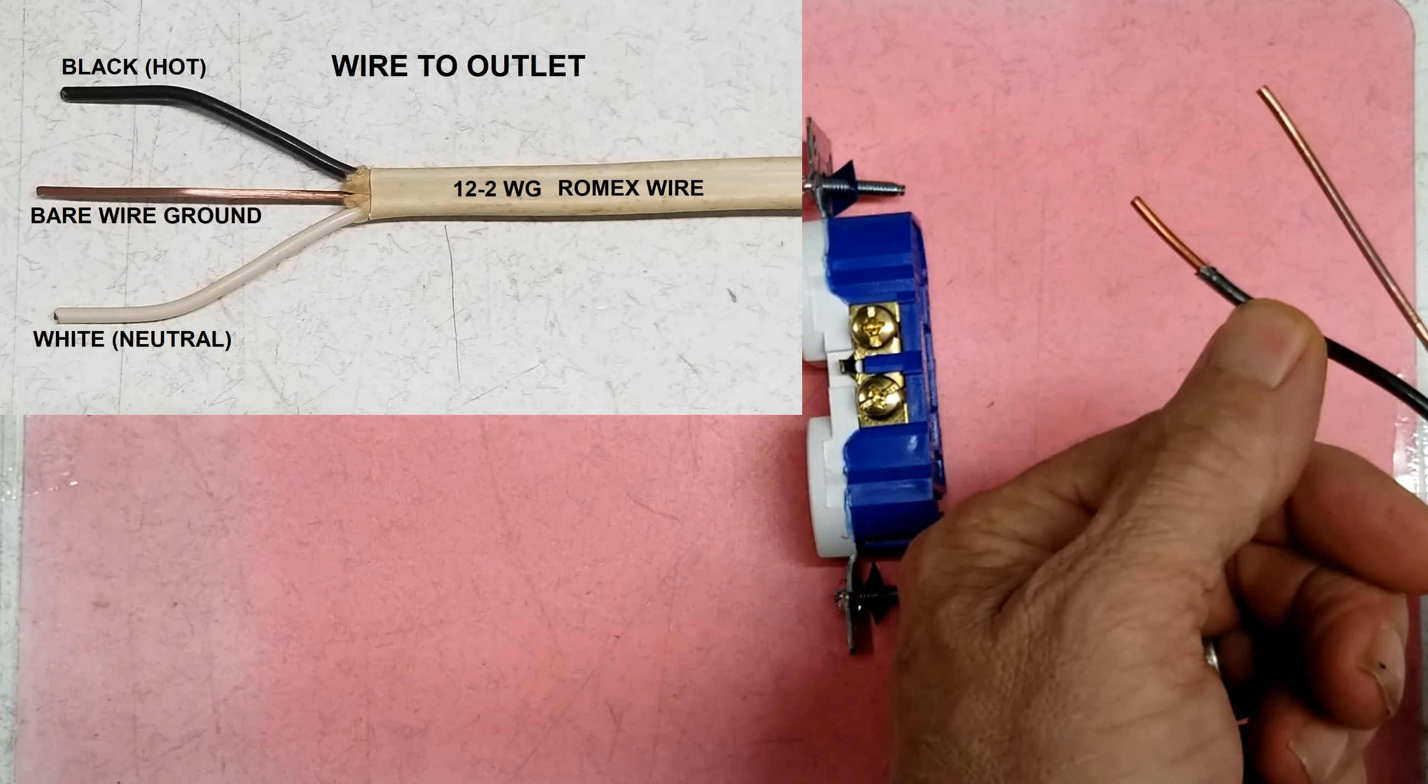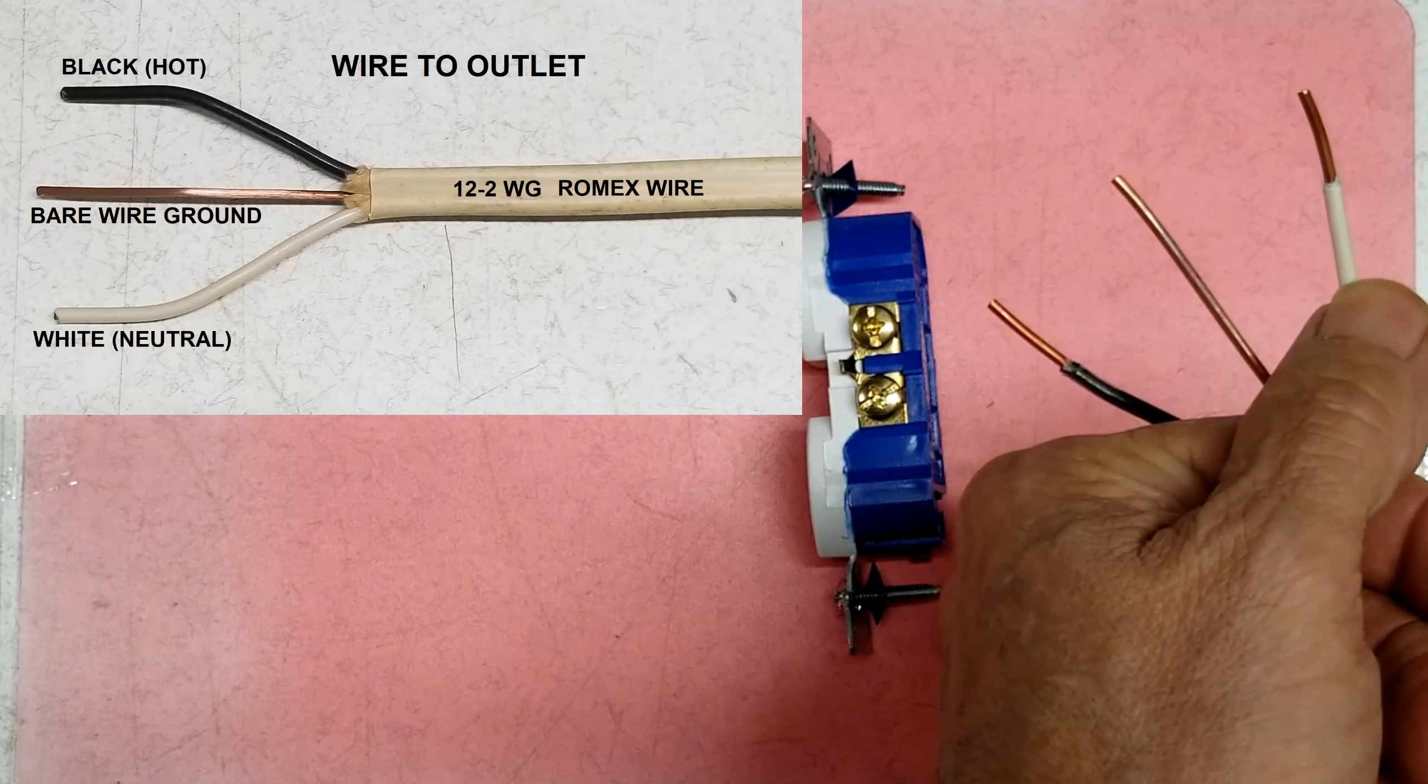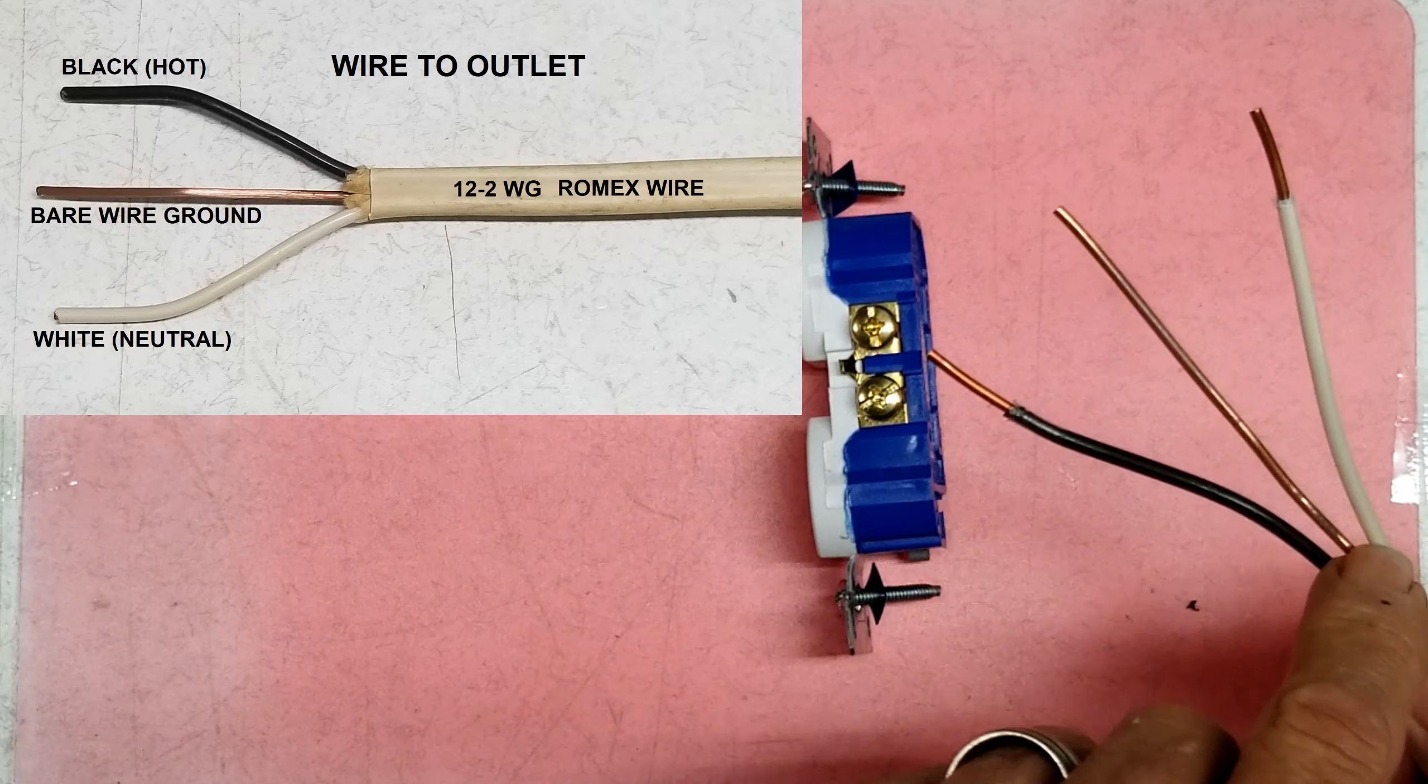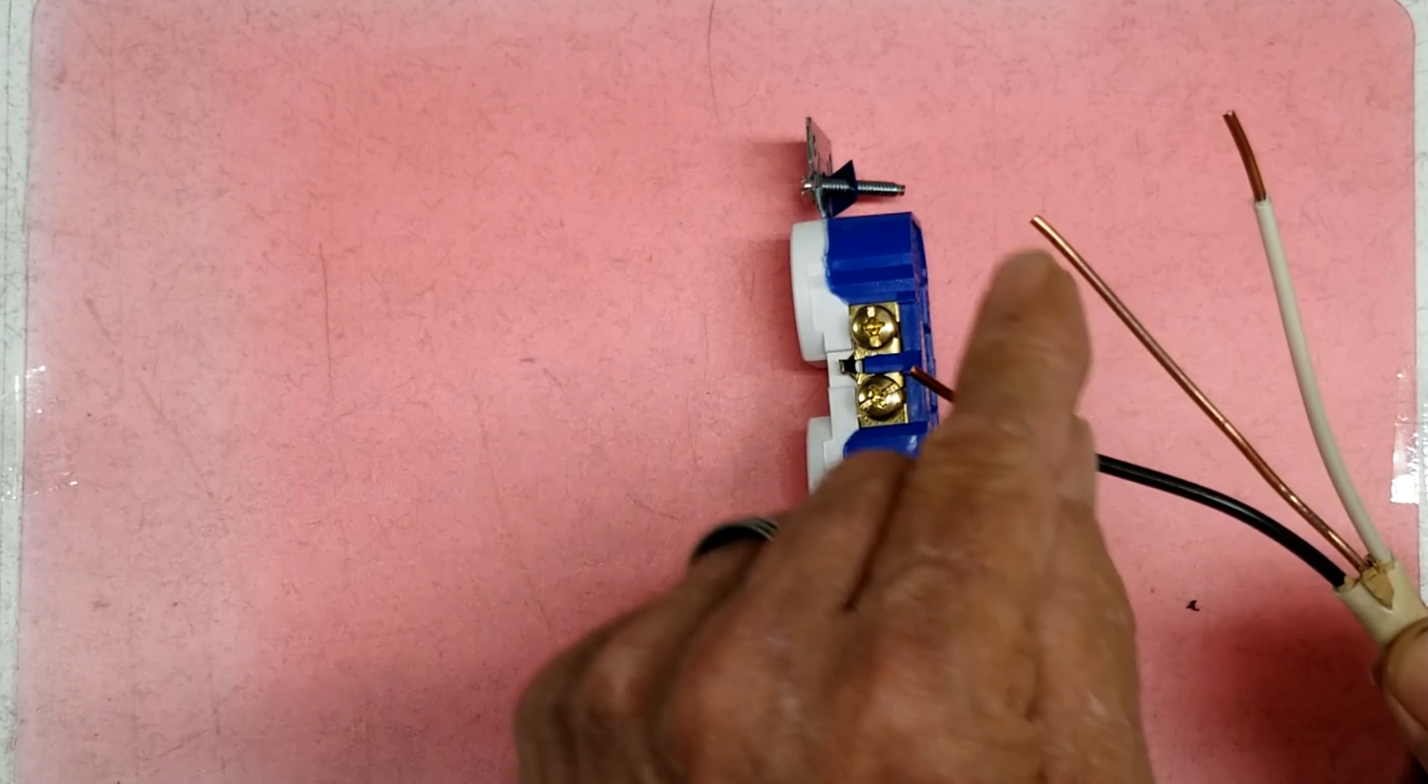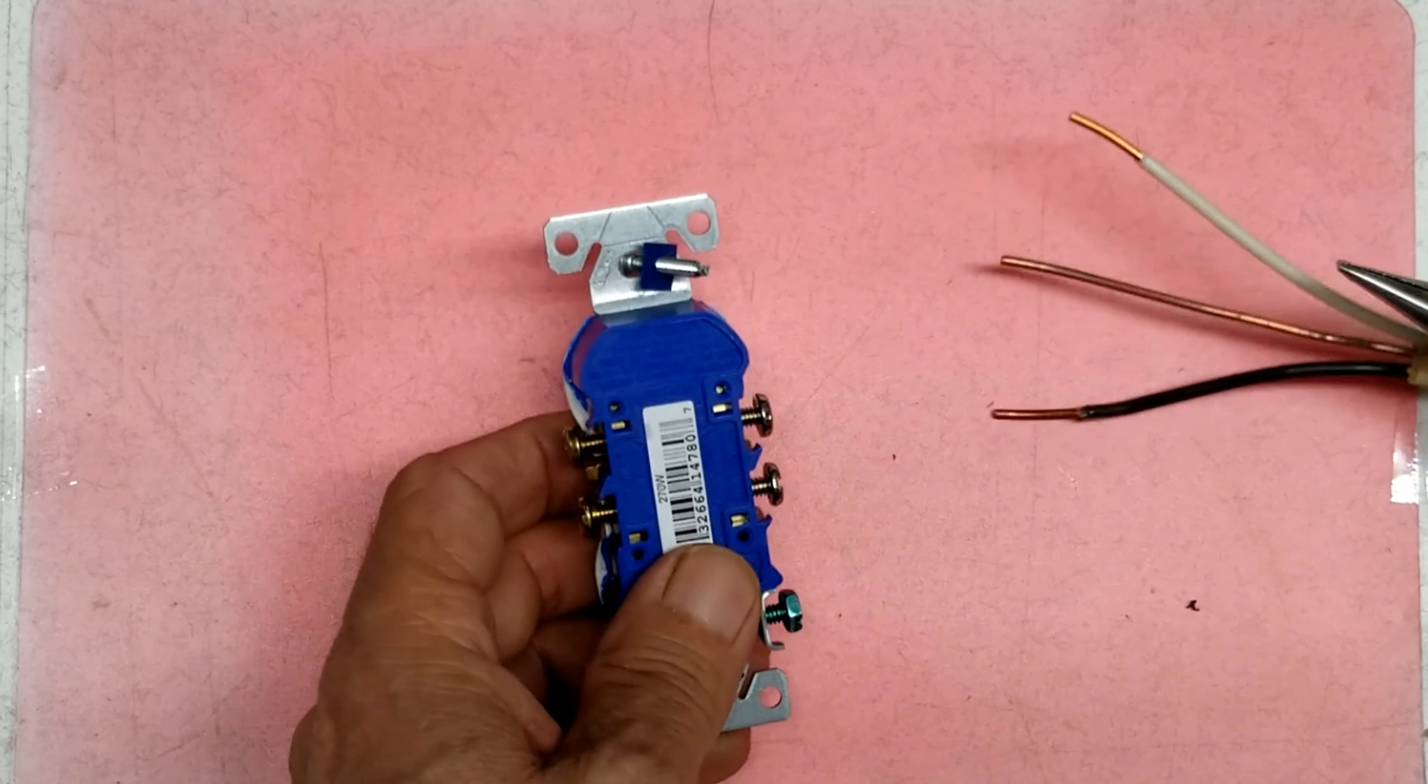Black is always your hot wire, always your power. White is always your neutral, your return neutral wire. Bare is always ground. Sometimes they have a green insulation on them or greenish color film on it. That's always ground. Green is always ground, and bare wire is always ground. Remember that. So we're going to hook this up.